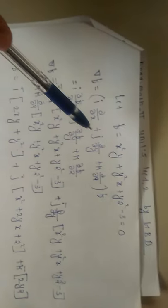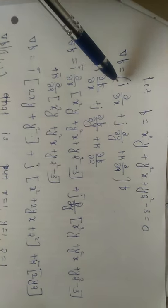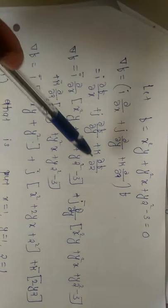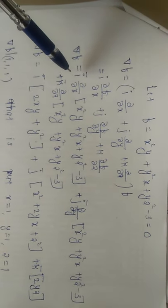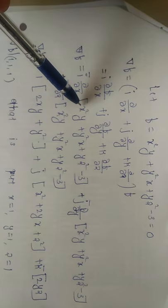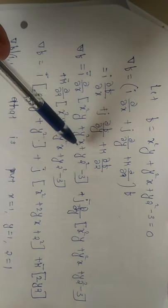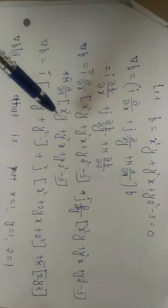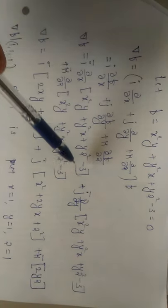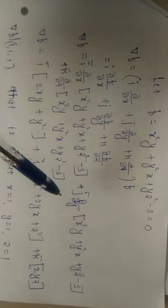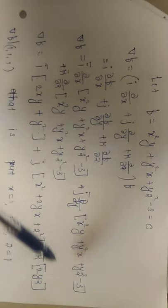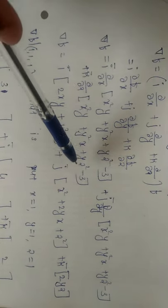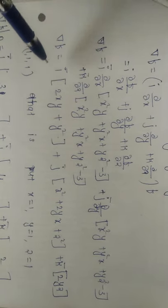Same way, ∇f using del = i ∂/∂x + j ∂/∂y + k ∂/∂z operated on f, where f = x²y + y²x + yz² − 3. So ∇f = i times the partial derivative of the bracket with respect to x, plus j times the partial derivative with respect to y, plus k times the partial derivative with respect to z.